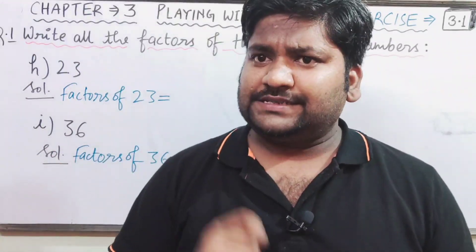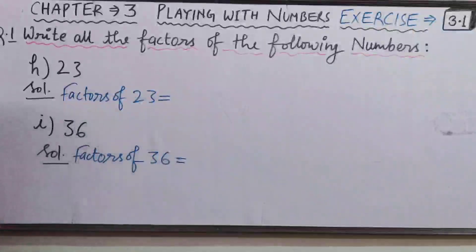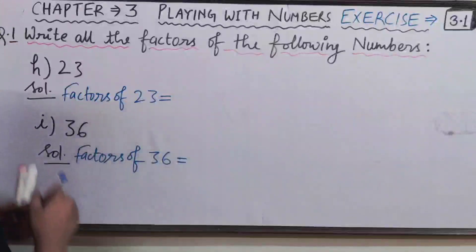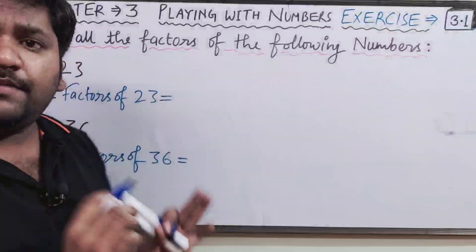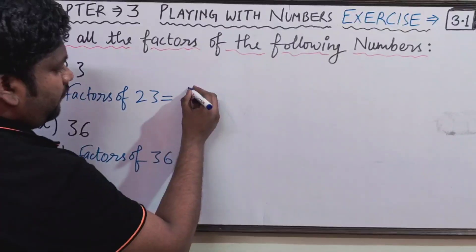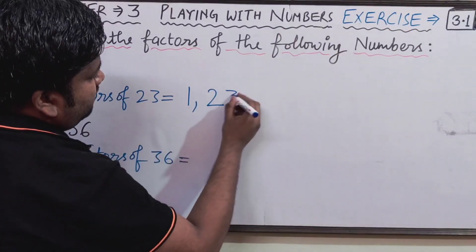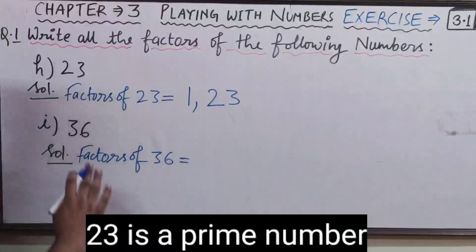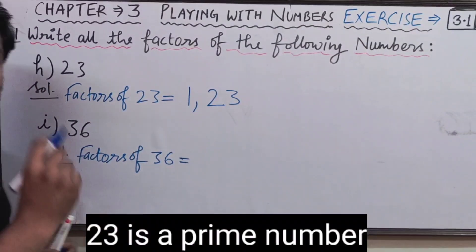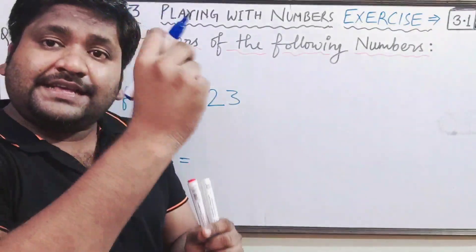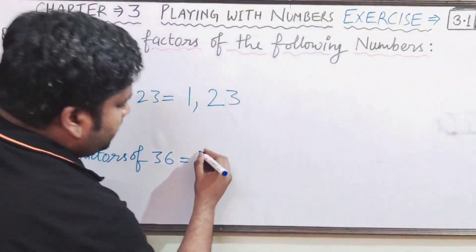Now let us take the two remaining parts h and i. Part h is 23 and part i is 36. As you know, 23 is a prime number — it doesn't come in the table of any number except 1 and itself. A prime number has only two factors: 1 and the number itself. Now let us write the factors of 36.